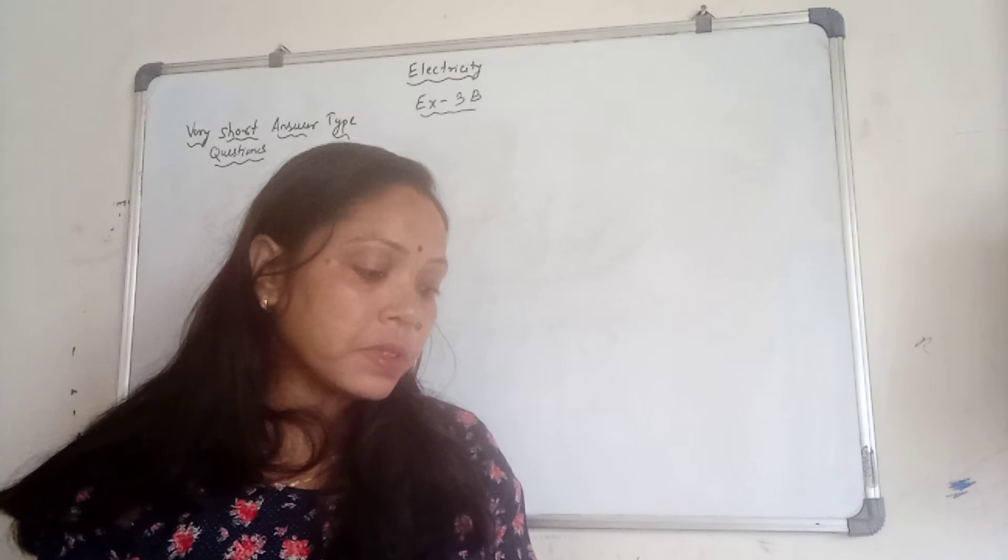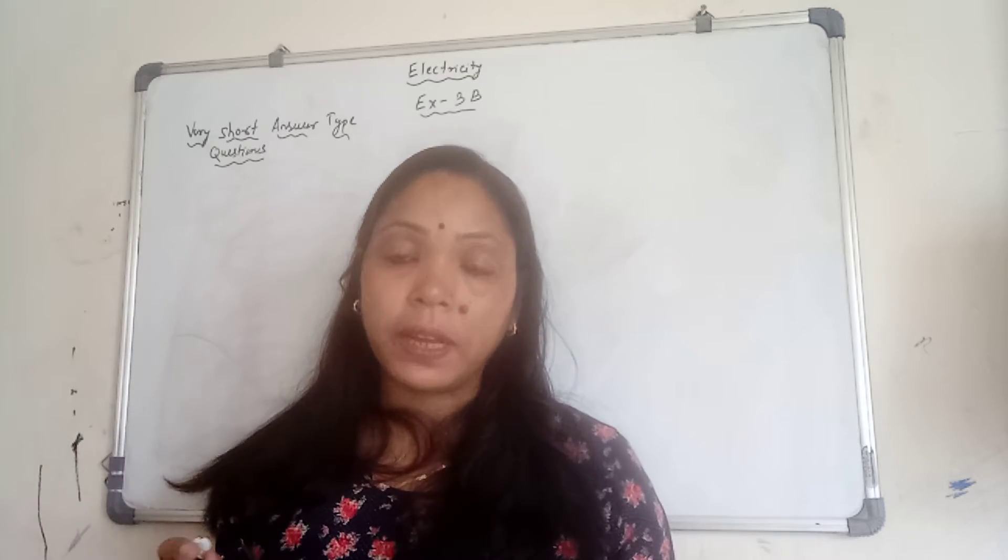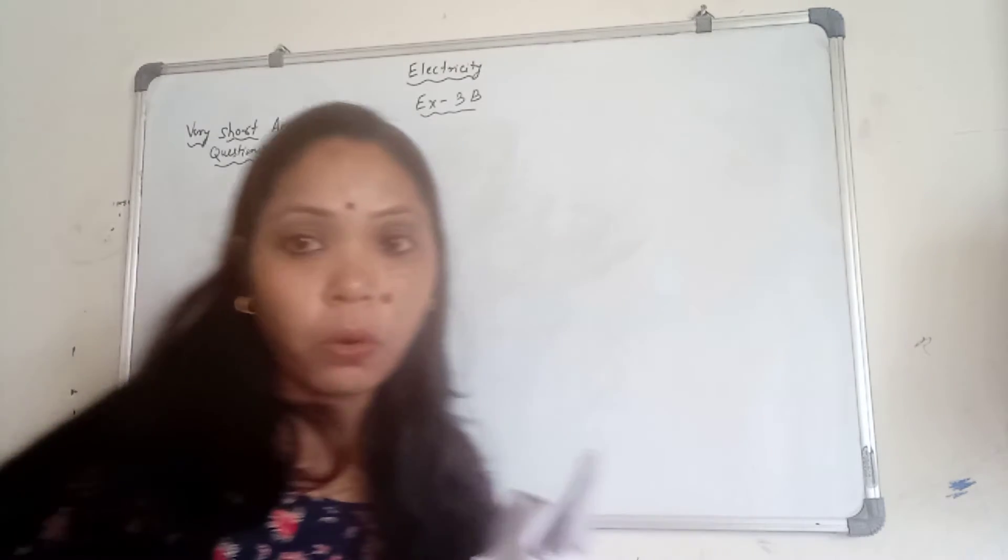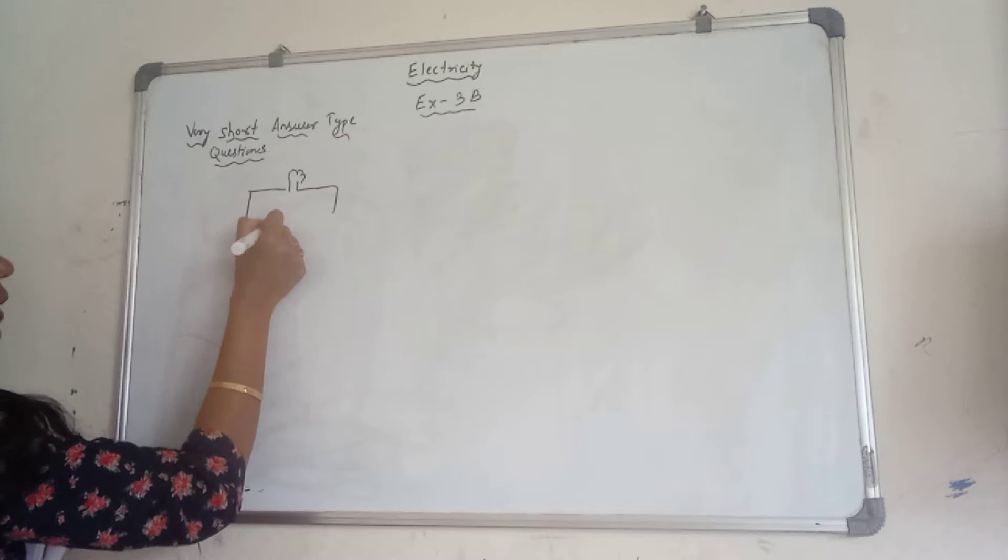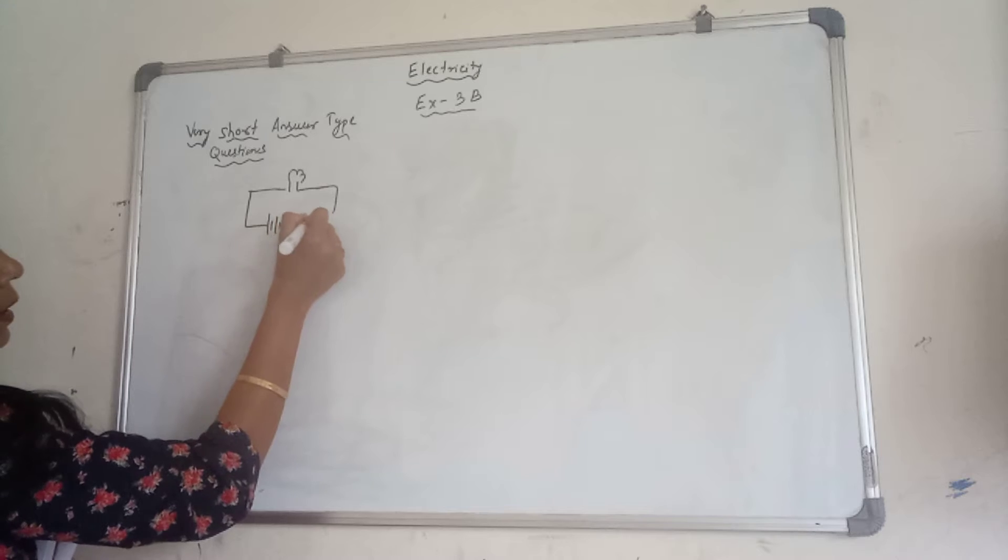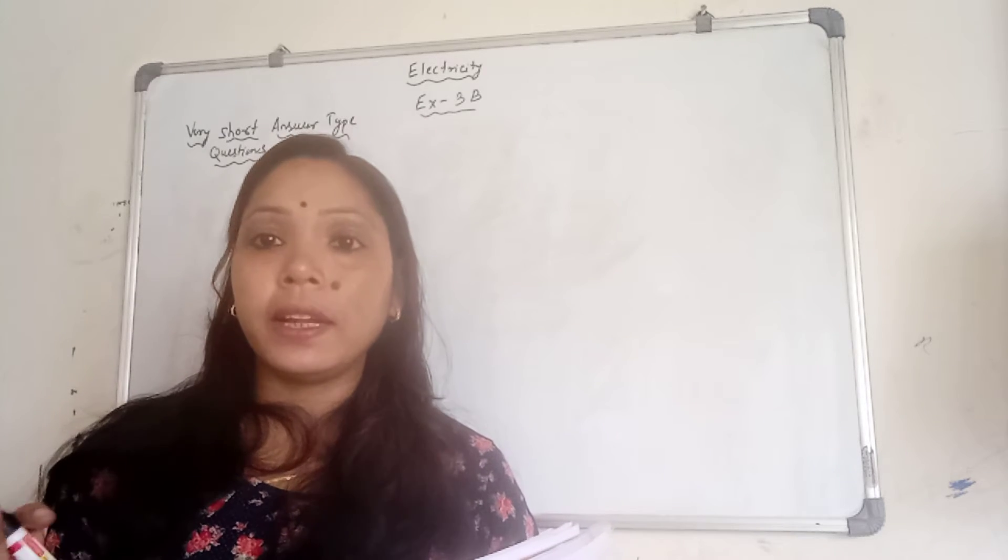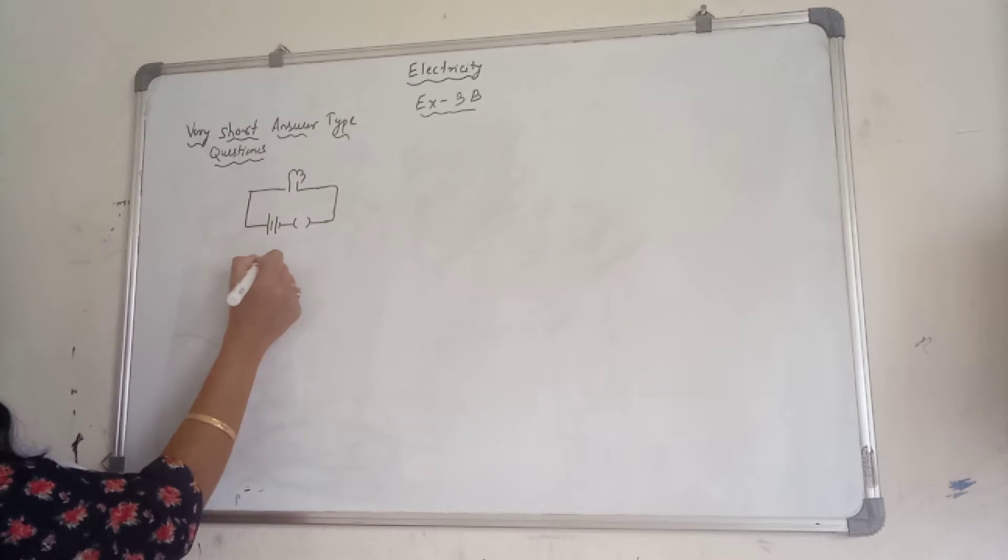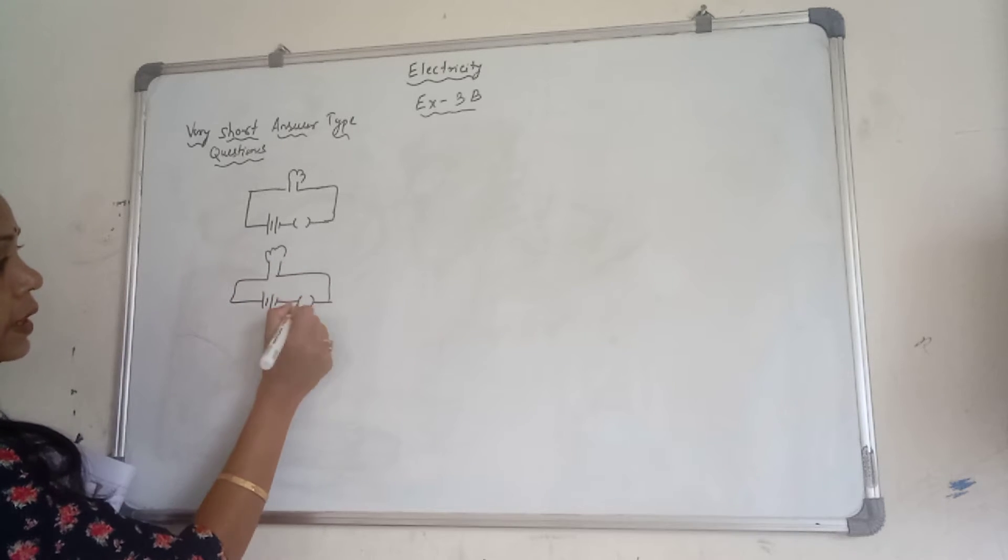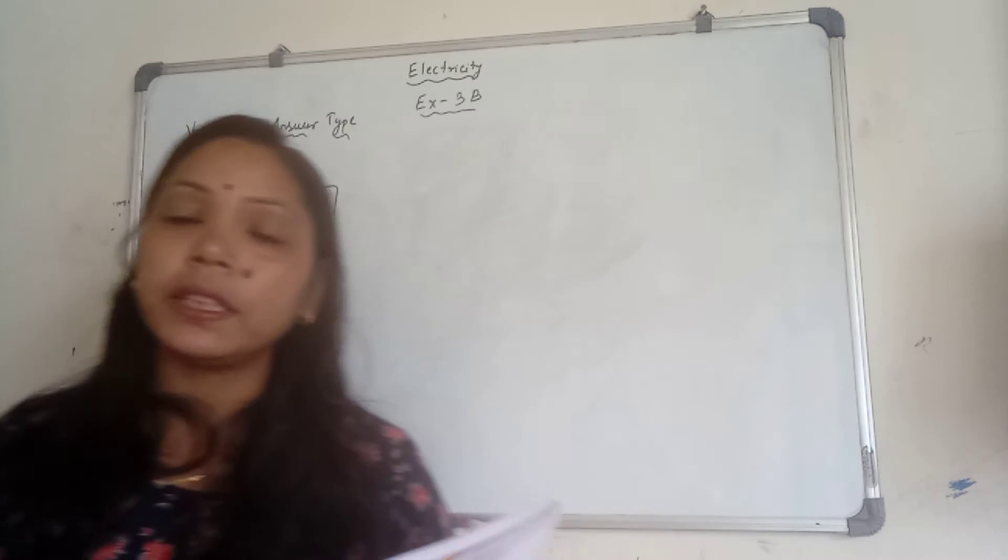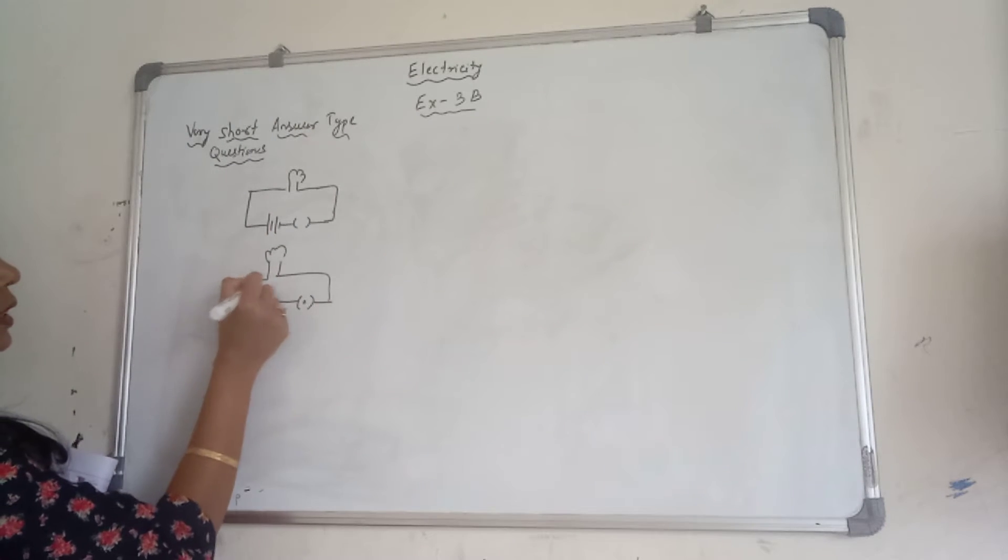Question number B: draw diagrams for an open electric circuit and a closed electric circuit. When you draw the circuit for open, you have to show the key as open. If I draw one simple circuit with bulb, this is your battery and here is a key. If I draw this type of key, it means now this is your open circuit. And in the open circuit, no current is flowing through the circuit.